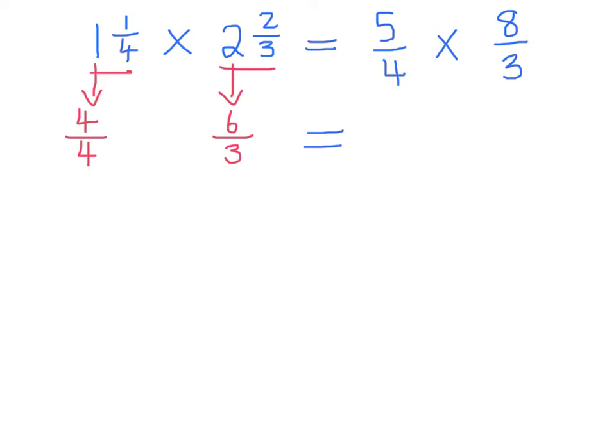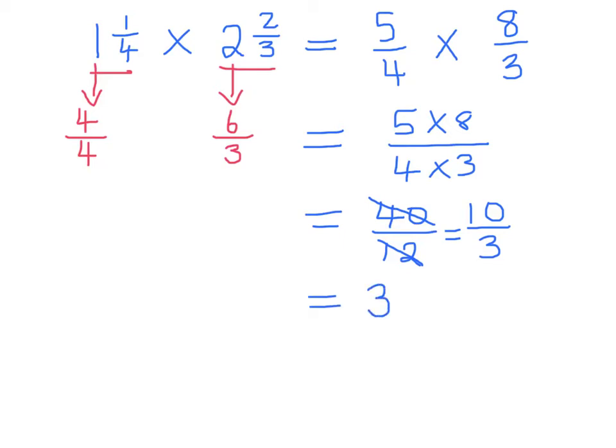Now multiplying these two fractions, we have 5 multiplied by 8 divided by 4 multiplied by 3. 5 eights are 40 and 4 threes are 12. I can reduce this fraction because I noticed that 4 divides into the top of the line, and it goes in 10 times. 4 divides into the bottom of the line, and it goes 3 times. So the answer is 10 divided by 3. I can also rewrite the answer. 3 divides into 10 three times. 3 threes are 9, and the remainder is one-third. So 10 over 3 is the same as 3 and one-third.